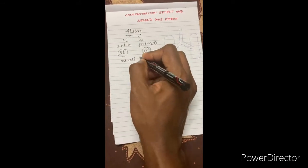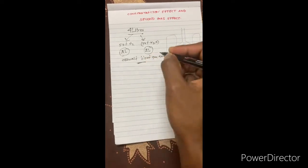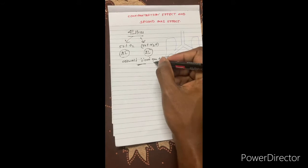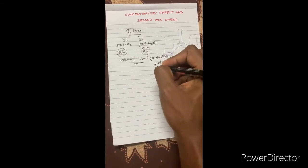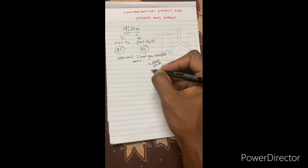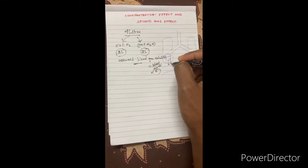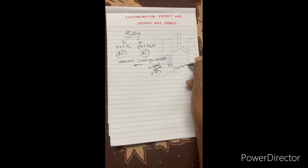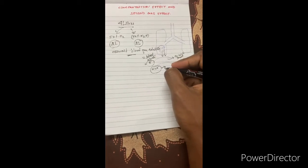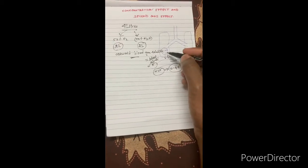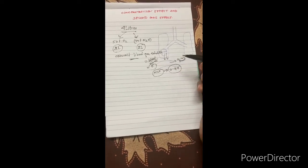Here I want to introduce the Ostwald blood-gas solubility coefficient. It states that the blood-gas solubility of any anesthetic agent is the ratio of the concentration of the anesthetic agent in blood to that in the alveoli. If the coefficient is zero, the gas is totally insoluble in blood and has a faster rate of diffusion from alveoli to blood and a quicker onset of action. Nitrous oxide has an Ostwald blood-gas solubility coefficient of around 0.47, giving it a quicker onset of action and faster diffusion from alveoli to blood to create equilibrium.